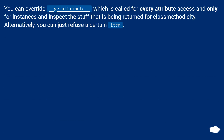You can override `__getattribute__`, which is called for every attribute access and only for instances, and inspect the stuff that is being returned for classmethod detection. Alternatively, you can just refuse a certain item.